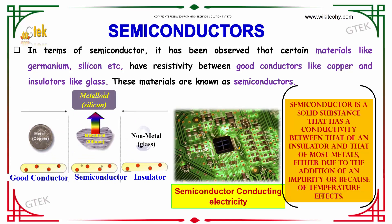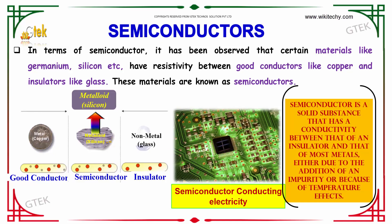In terms of semiconductors, it has been observed that certain materials like germanium and silicon have resistivity between good conductors like copper and insulators like glass. These materials are referred to as semiconductors. A semiconductor is a solid substance that has a conductivity between that of an insulator and that of most metals, either due to the addition of an impurity or because of temperature effects.